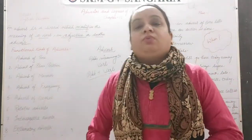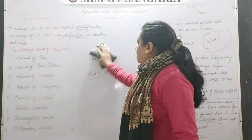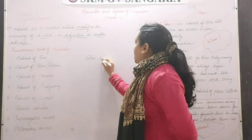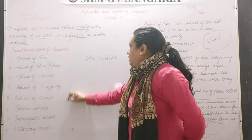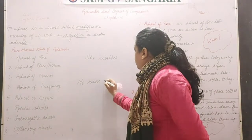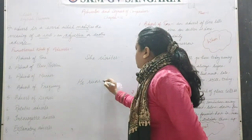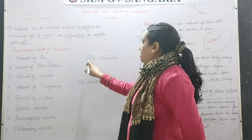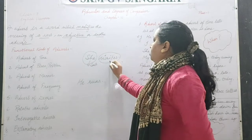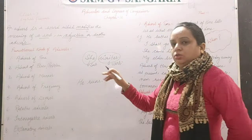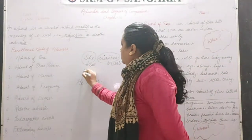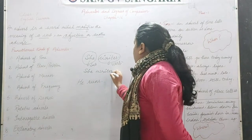Now let's understand this with examples. I have written a sentence: 'She writes.' The second sentence is 'He runs fast.' In the first sentence, 'she' is the subject and 'writes' is the verb — the sentence is complete as a combination of subject and verb. But if I add something, she writes neatly.